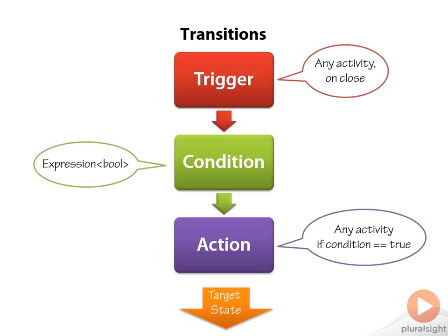The action then is simply an activity that's going to execute if the condition is true. So the trigger fires, the condition evaluates, and if it's true, the action executes and you move to the target state. That's the makeup: we've got states, we've got transitions, and these transitions are where much of the action happens — with triggers, conditions, and actions before moving to a target state.